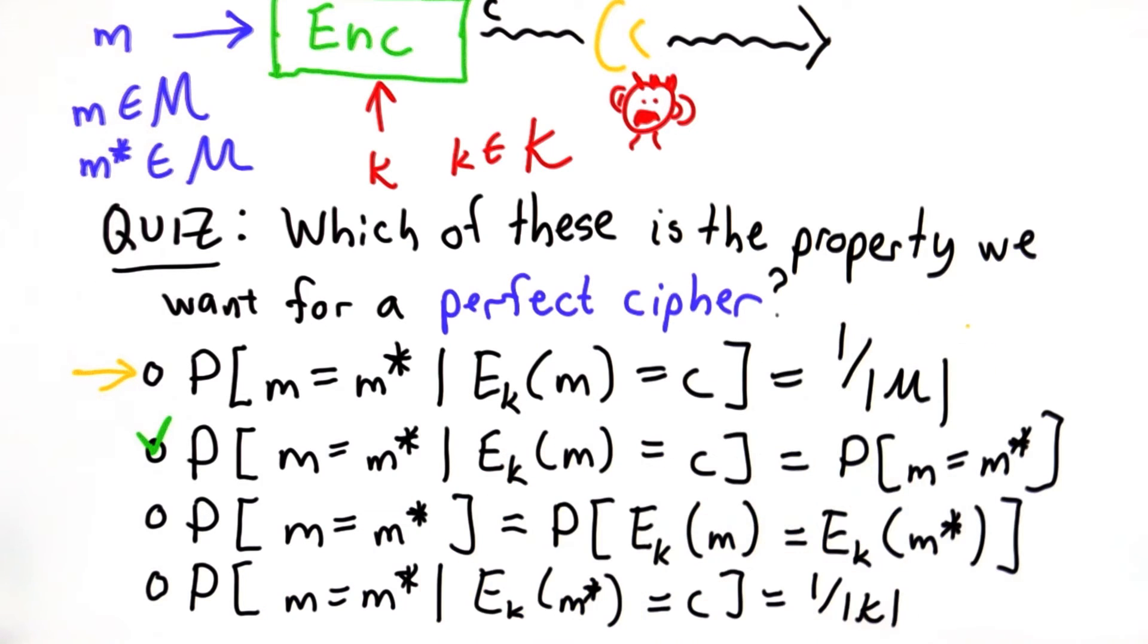The problem is the attacker might know something more. They might know that some messages are more likely than others. In most realistic scenarios, this is the case.